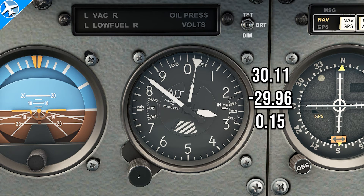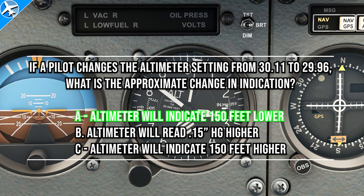Doing the math, that's a difference of 0.15. Every inch of pressure change equals 1,000 feet. If we take 0.15 times 1,000, that tells us the altimeter will indicate 150 feet lower.